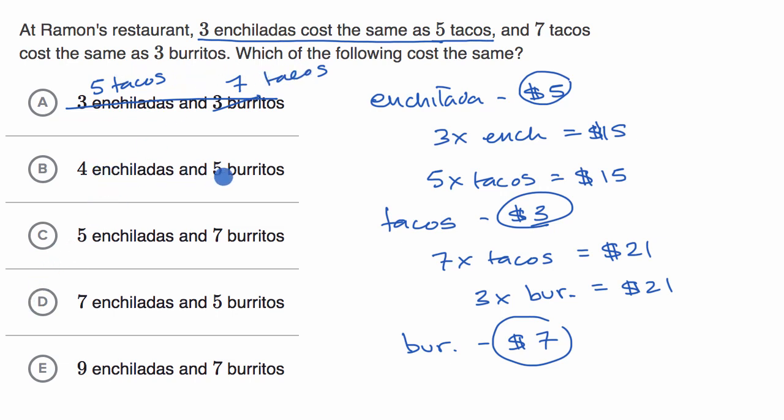Four enchiladas and five burritos. Let's see, four enchiladas are going to be $20, four times five. Five burritos are going to be $35. So we can rule that one out. Five enchiladas and seven burritos. Five enchiladas, five times five, that's going to be $25. Seven burritos are going to be $49. Nope, we could rule that one out.